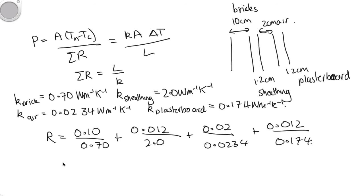So solving this on the calculator, we end up with 1.073 meters squared kelvin per watt. And so that's the R value for this wall.